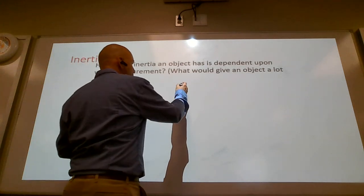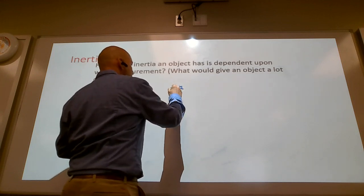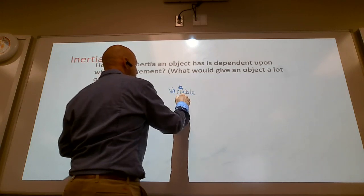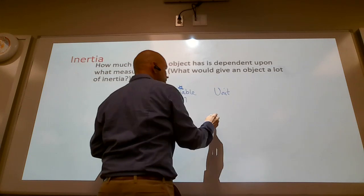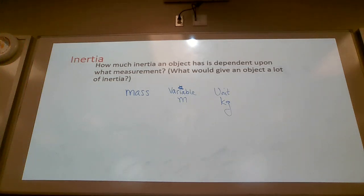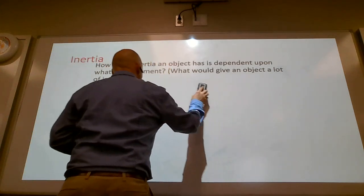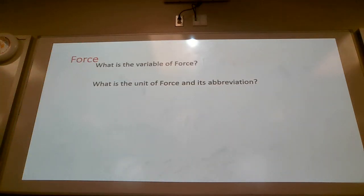The more mass you have, the more inertia you have. The variable for mass is a lowercase m. The unit, we measure it in physics, we measure that in kilograms. In chemistry, you measured mass in grams. In physics, we measure that in kilograms.